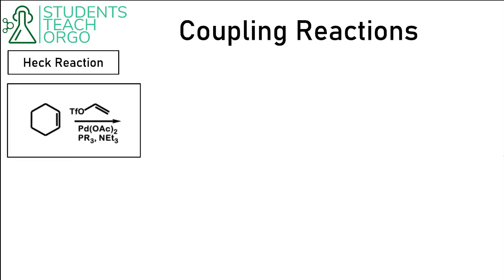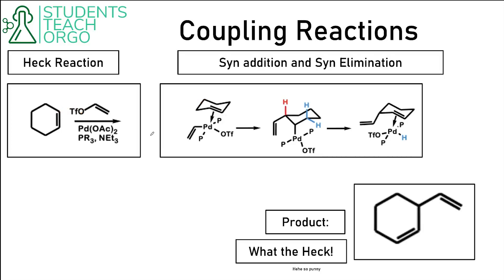Here is another example of the Heck reaction — think about what the product is. Most people would assume the product is formed by losing the OTf and creating a new bond between those two carbons. But it turns out that's not the case — when we look at the actual product, the double bond has moved. In order to figure out why, we have to remember a little bit about chairs from organic chemistry 1.